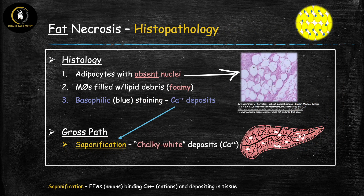Now let's look at what fat necrosis tissue looks like on histopathology. On histology, the adipocytes will not have any nuclei because dead cells don't have nuclei. You can identify them as adipocytes because their cytoplasm is filled with lipids, which don't stain — that's why you see large blobs of white. The difference from normal adipocytes drawn in cartoon form is that normal ones have nuclei. When you see adipocytes without nuclei, you're looking at fat necrosis.